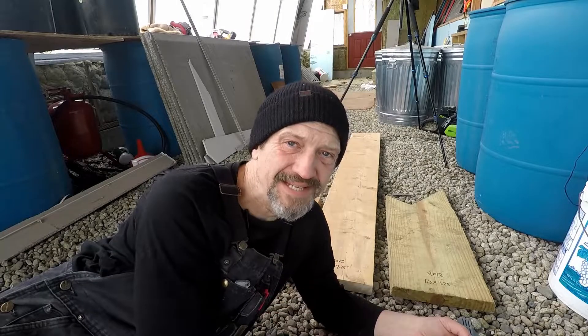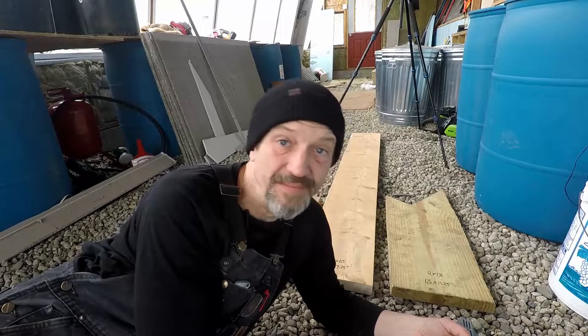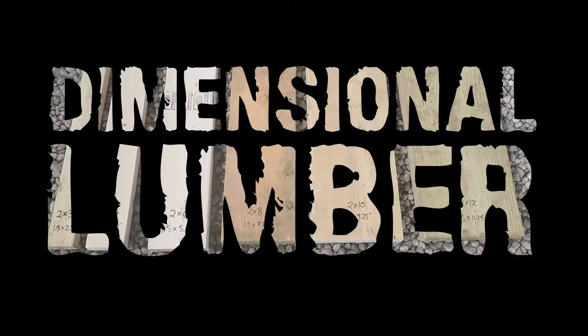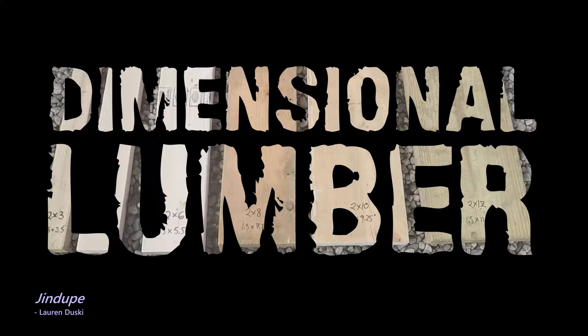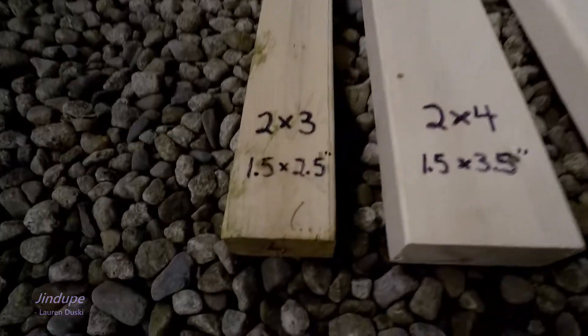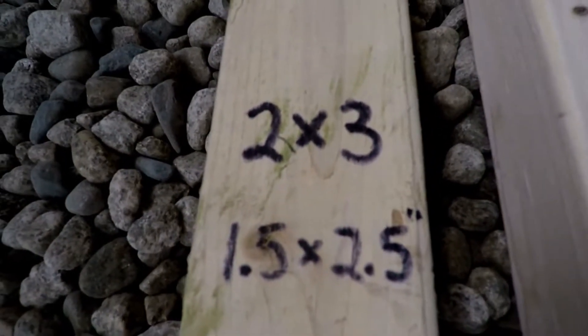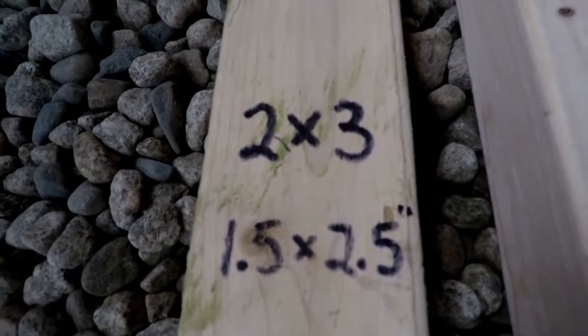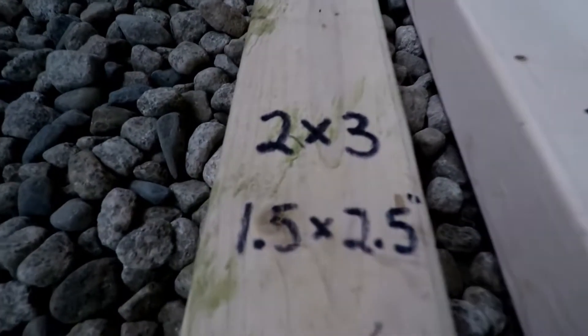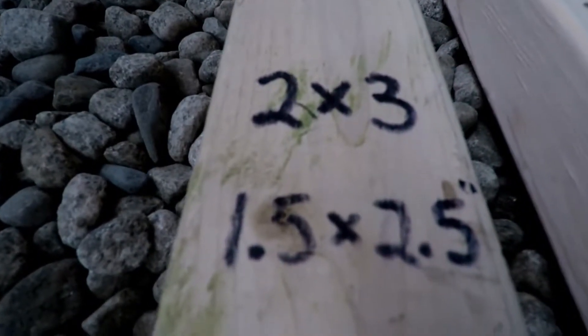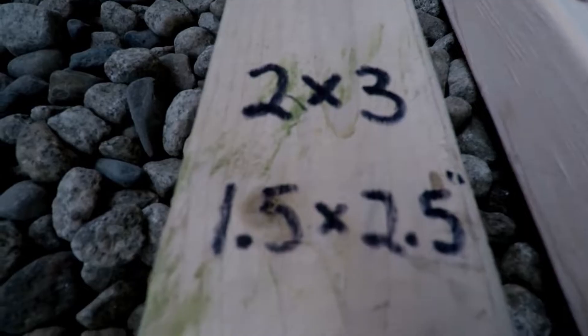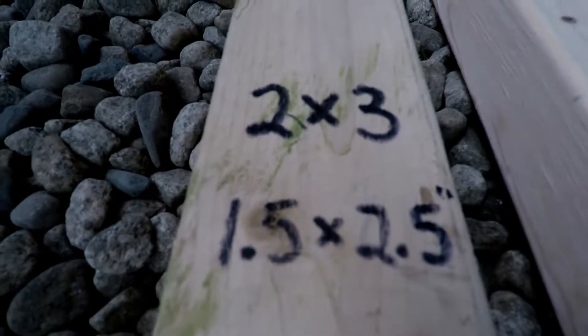I want to just talk about the basic types of dimensional lumber. Here's our basic wood. The smallest that is usually offered in regular dimensional lumber is a two by three. The actual dimensions, as you can see here, are 1.5 inches by 2.5 inches. That kind of comes from a period in the past.